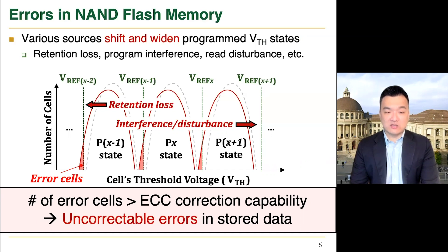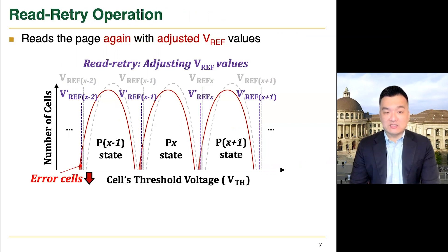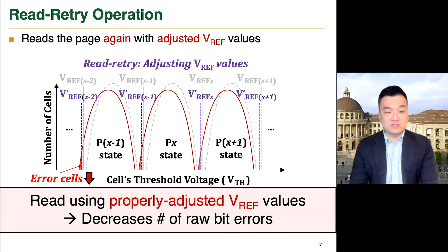If the number of such cells becomes larger than the ECC correction capability, it introduces uncorrectable errors. This happens quite frequently in modern SSDs, but increasing ECC capability requires significant latency, power, and area overheads. To address this, modern SSDs commonly adopt read retry, which reads the page again with adjusted read reference voltage values. As shown in the figure, doing so significantly reduces the number of raw bit errors in reading the page.